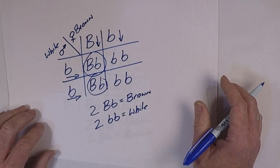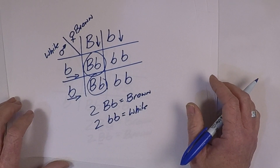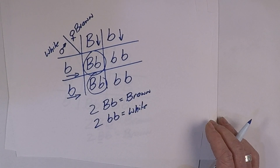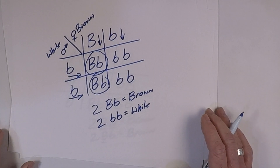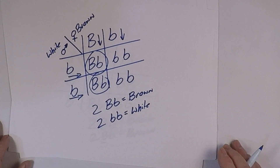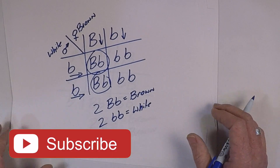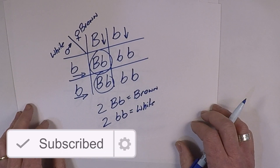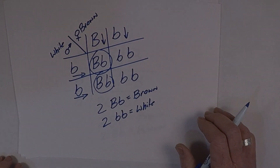Hopefully this has helped you out. This was a monohybrid cross — tracking one gene. You can also look at dihybrid crosses. Let me know in the comments below if you have any questions, and don't forget to subscribe and like. Hit the notification bell so you're alerted to new videos. Thanks for watching — we'll see you next time on Mr. Hayes' YouTube channel.